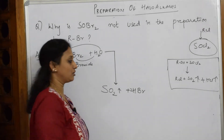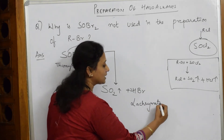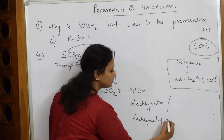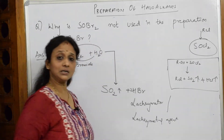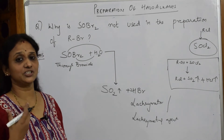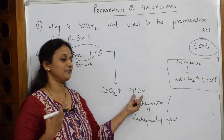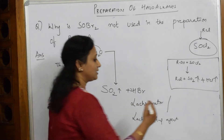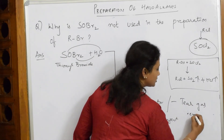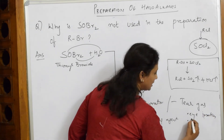This HBr that forms is called a lacrimating agent. You have heard about tear gas — it causes irritation to your eyes, irritation to your lungs, congestion. The effects of this HBr are the same; it acts as a lacrimating agent causing eye irritation and lung congestion.